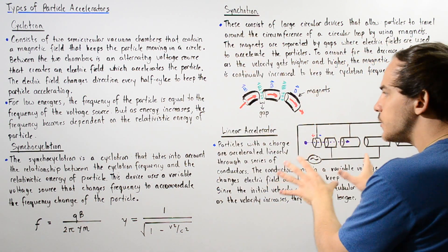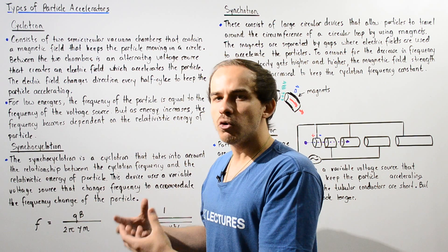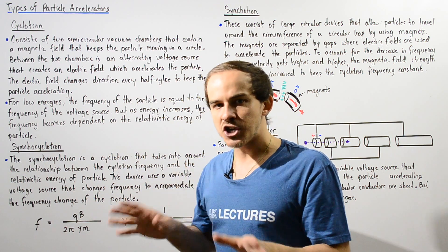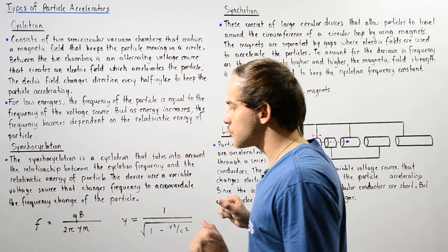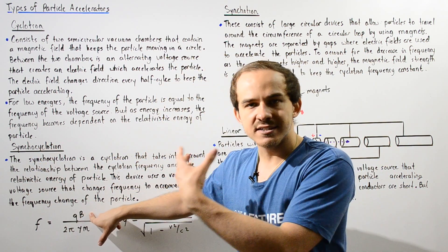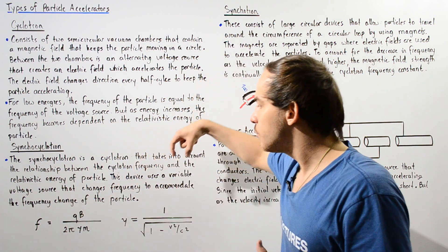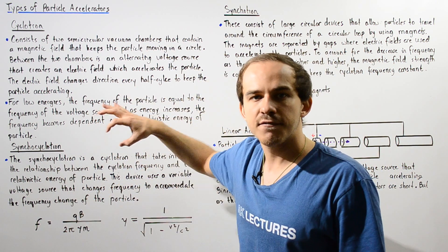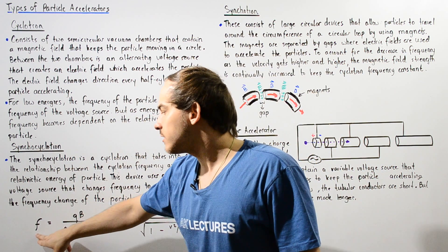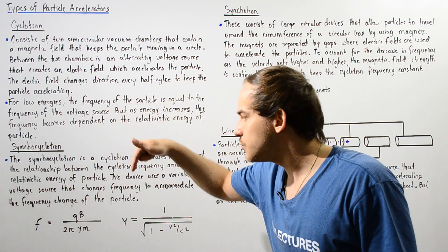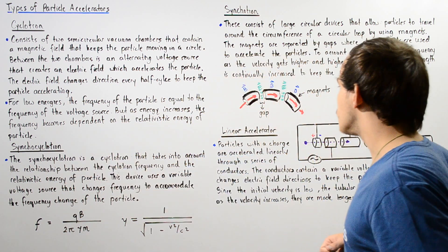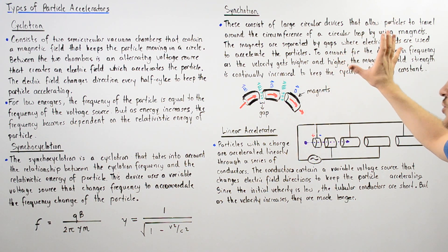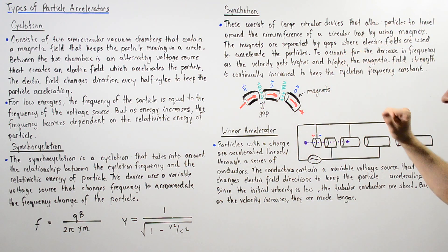So in the synchrotron, the frequency of our variable voltage source does not change; rather, we change the magnetic field. But in the synchrocyclotron, the magnetic field remains constant, but we change the frequency of oscillation of that variable voltage source — the cyclotron frequency is allowed to decrease, and as that takes place, the frequency of the voltage source also decreases. In the synchrotron, the voltage source frequency does not decrease, and the cyclotron frequency also does not decrease.